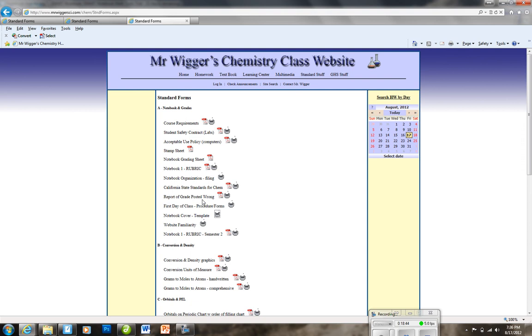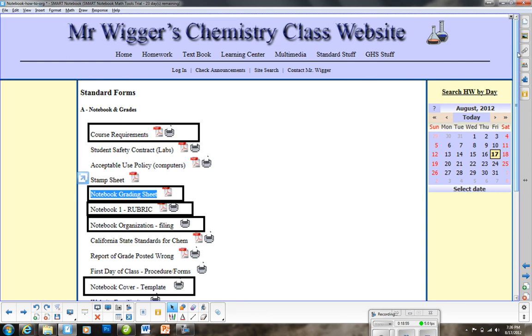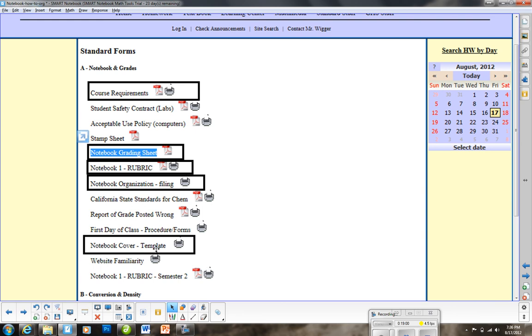First day of class procedure forms is in here. You will see lots of stuff about the notebook. I have circled almost all of those now in this picture of that same screen we were just in. There is your cover template, the notebook organization and filing, the rubric, the notebook grading sheet, and the course requirements. I hope this helps you, and I hope you are going to have a perfect notebook and do well in the class. Bye-bye.